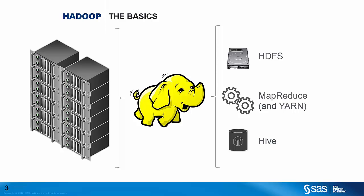And finally, Hive provides data warehousing infrastructure, offering a SQL-like front-end to store data in HDFS and run queries as MapReduce jobs or even in Spark. There are many more Hadoop services and capabilities not shown here, but we're going to stick with these fundamental ones for now.